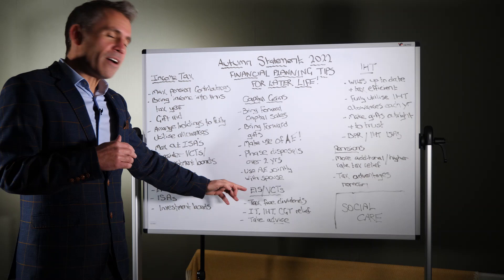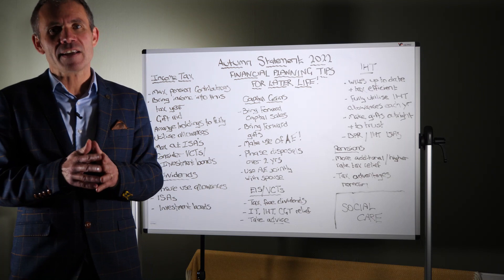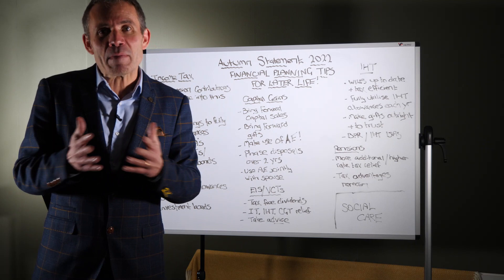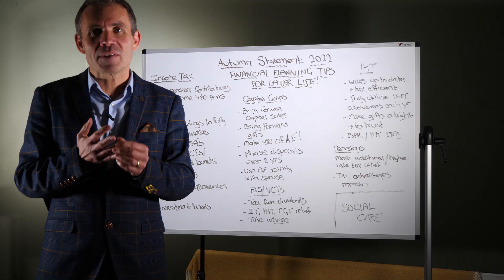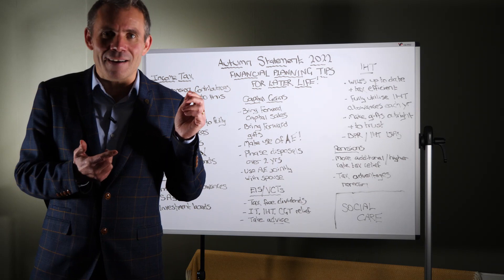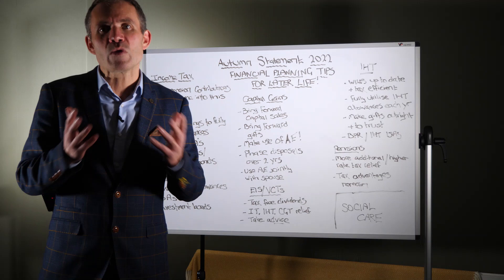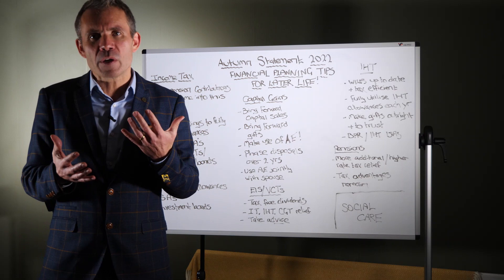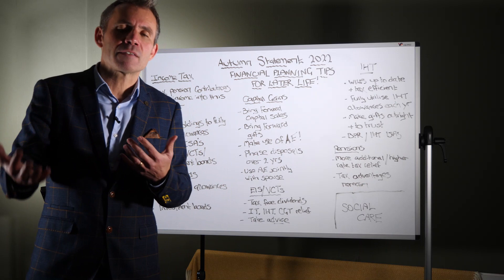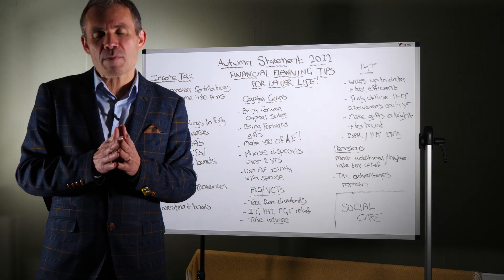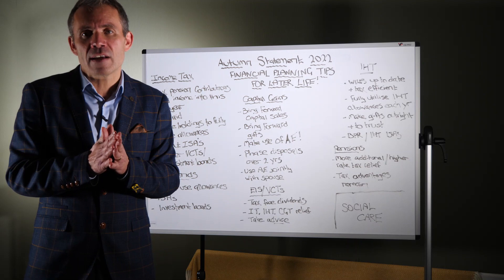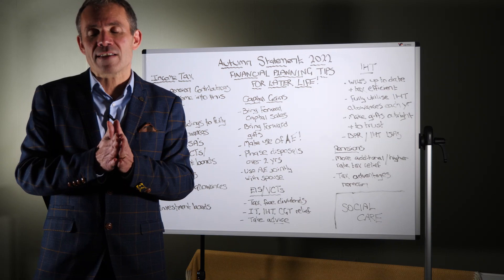EIS VCTs. So EIS, Enterprise Investment Scheme, VCT, Venture Capital Trust. These are the most tax efficient investments. We're getting income tax relief at 30%. We've got dividends, no tax on dividends, inheritance tax free, capital gains tax free. Basically, these are investments which the government really want you to invest in to boost the UK economy. And therefore, there's huge tax incentives to invest in these types of products. They tend to be for people who have already explored all the basic planning around pensions and ISAs and investment bonds. But if you're in that world and you're looking for something to do in a really tax efficient way, then definitely get in touch and take advice on these. They're not appropriate for everyone, but definitely something to consider just purely for their tax advantages.